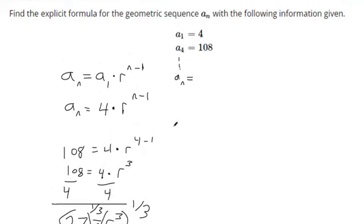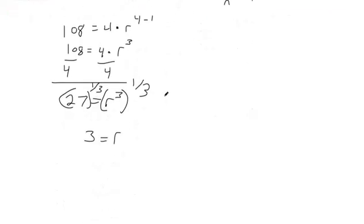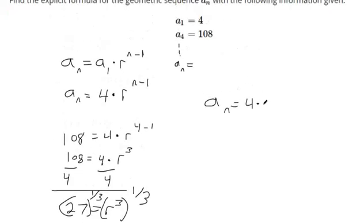So now we're ready for the formula. The formula for the nth term is equal to the first term, which is 4, times the common ratio — which we just found to be 3, it's multiplying by 3 each time — to the n minus 1 power. So that's the formal algebraic way of doing it.